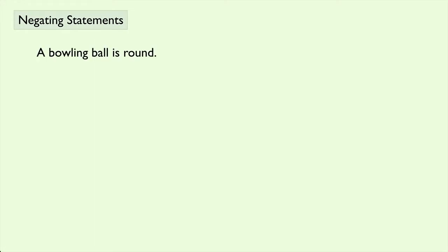Consider the statement: a bowling ball is round. Most people would agree that this is a true statement. Now what if we said a bowling ball is not round? This would be a false statement. When you change the truth value of a statement, that's called negating the statement.